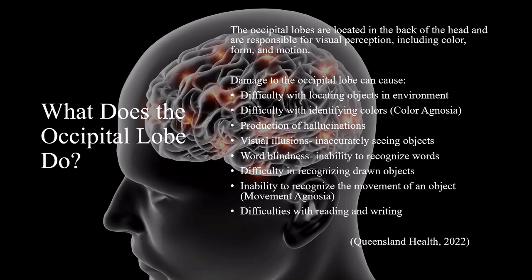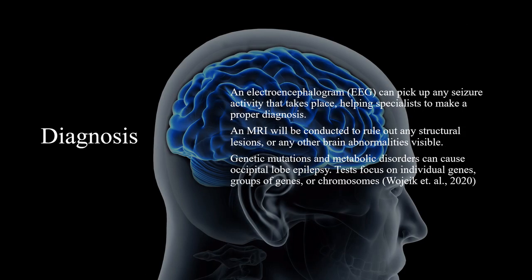Damage to the occipital lobe can cause difficulty with identifying colors, production of hallucinations, visual illusions, inaccurately seen objects, word blindness, inability to recognize words, difficulty in recognizing drawn objects, inability to recognize the movement of an object, and difficulties with reading and writing.